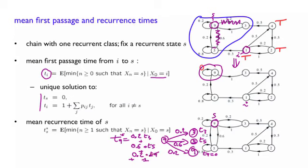So what we have shown here, that in general, this is actually what you would have. And this is exactly what we have written here. ts of star is 1 plus the summation of psj of t of j, where t of j is the solution to this system.